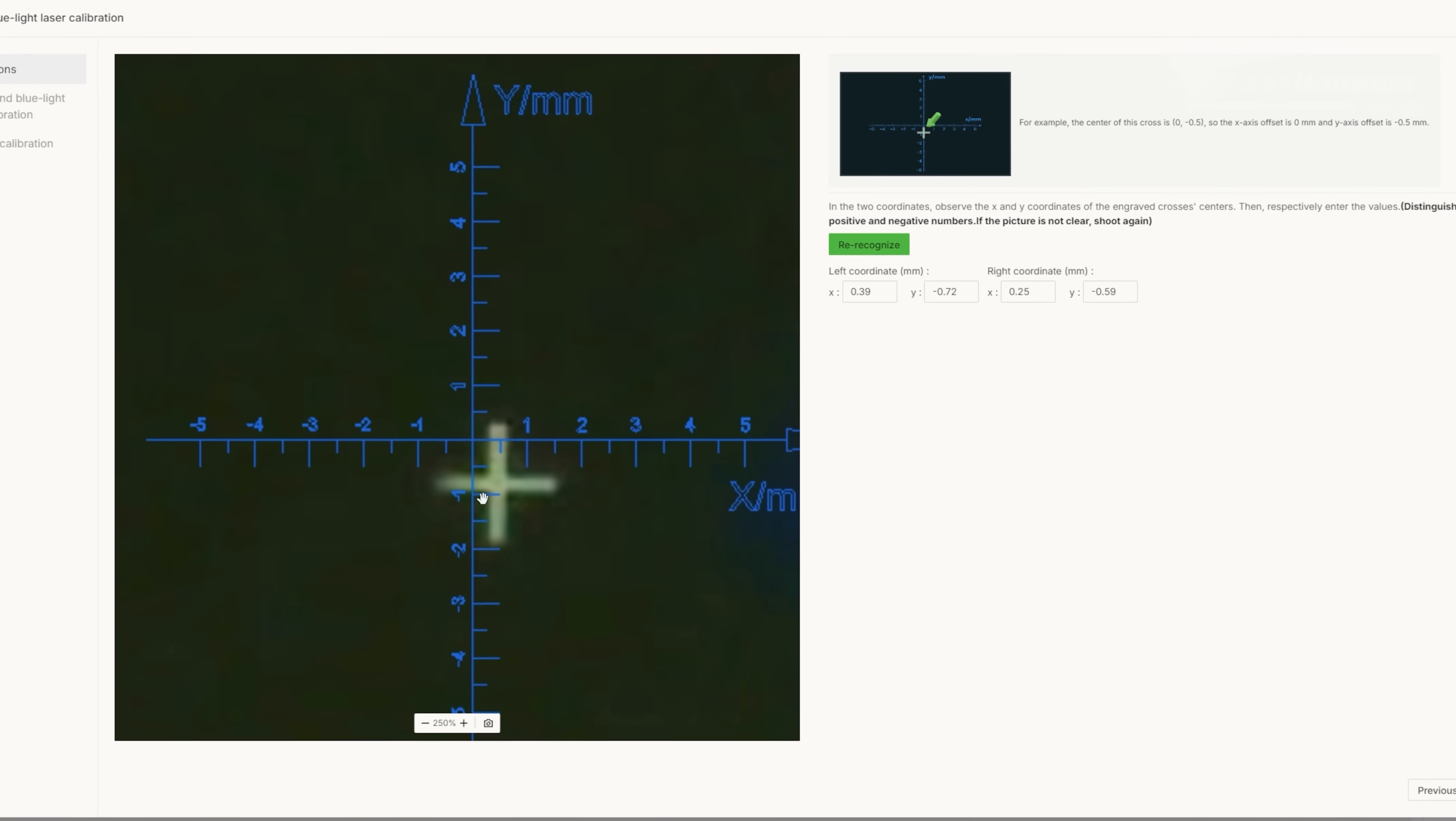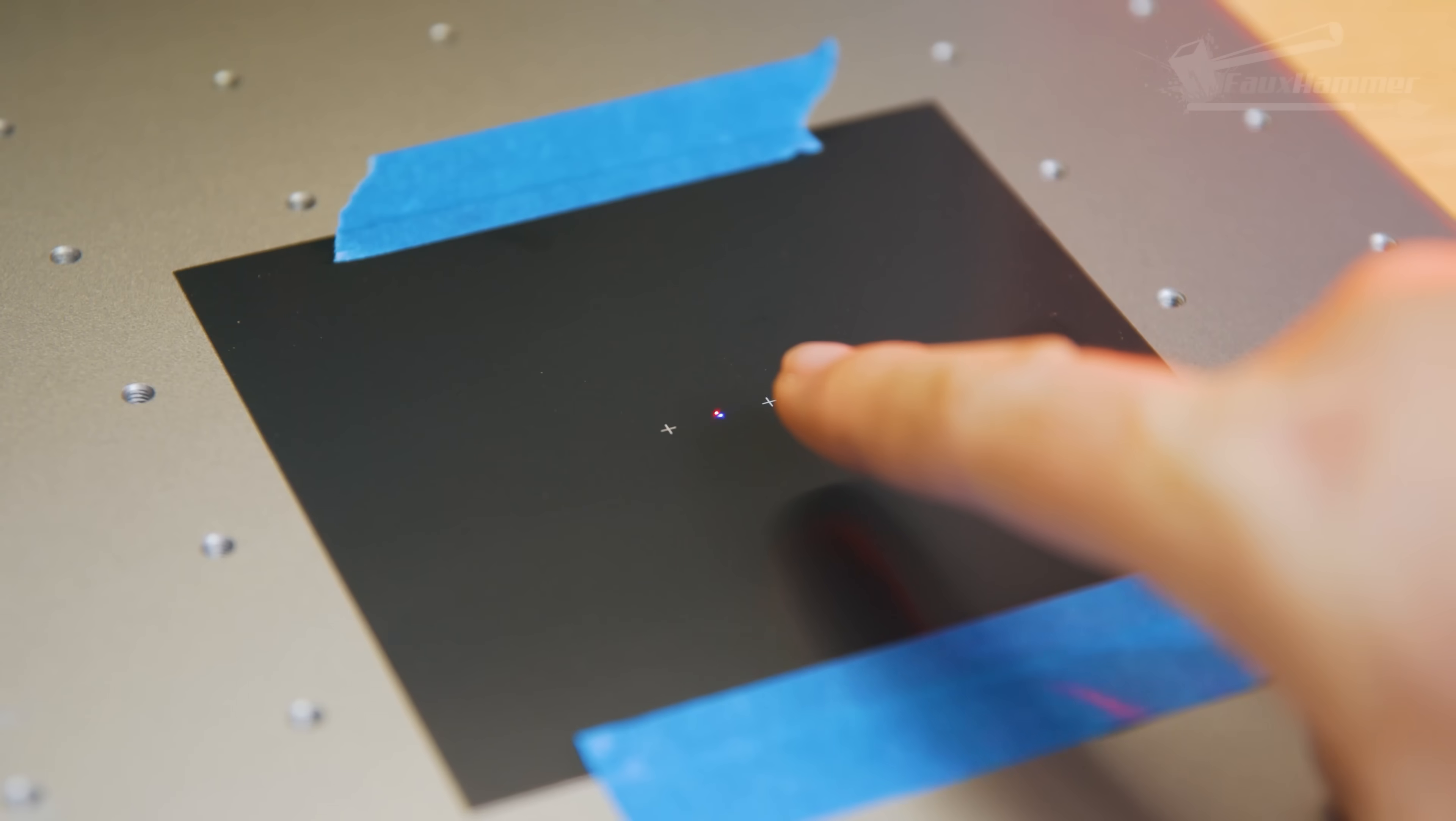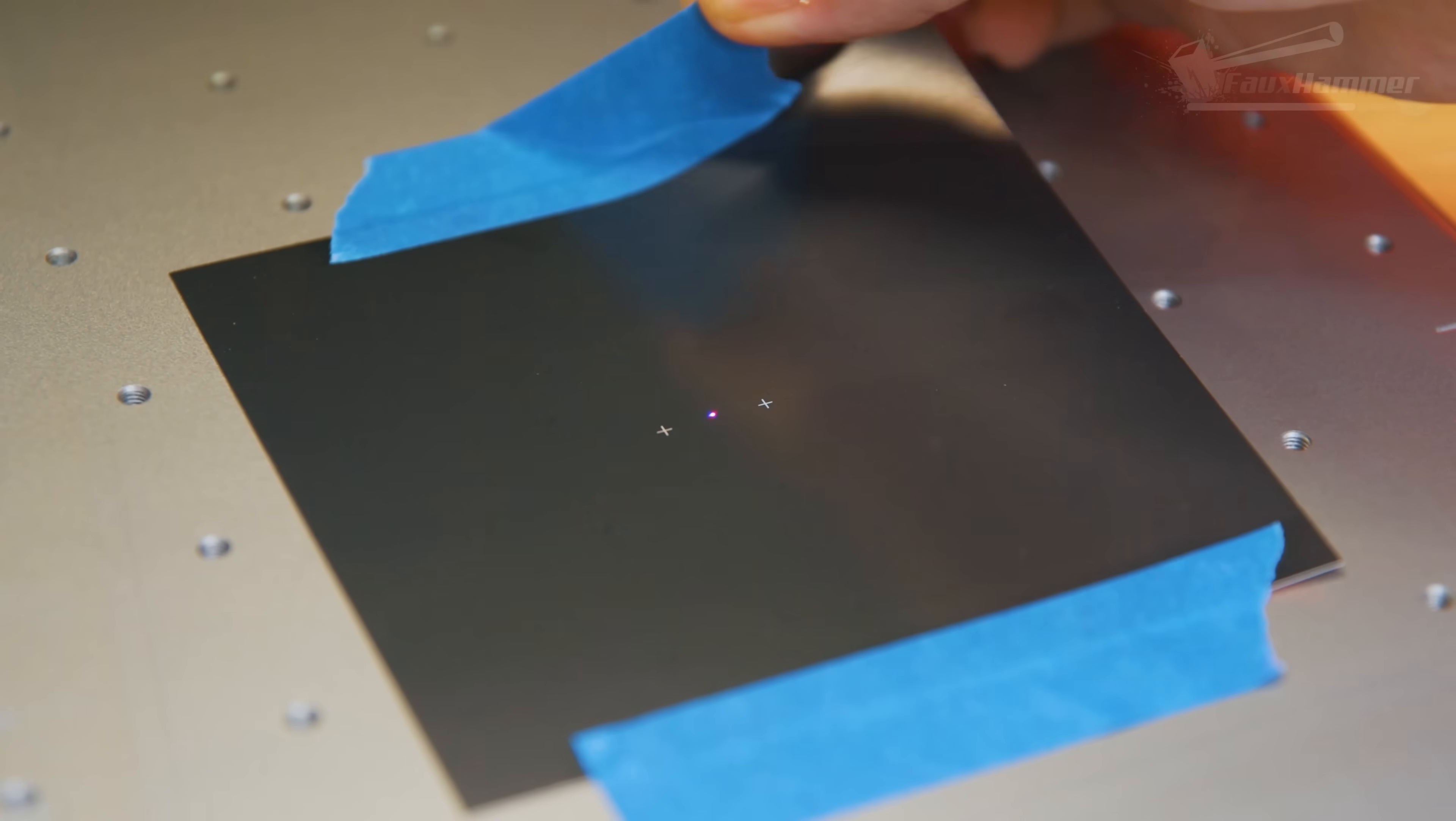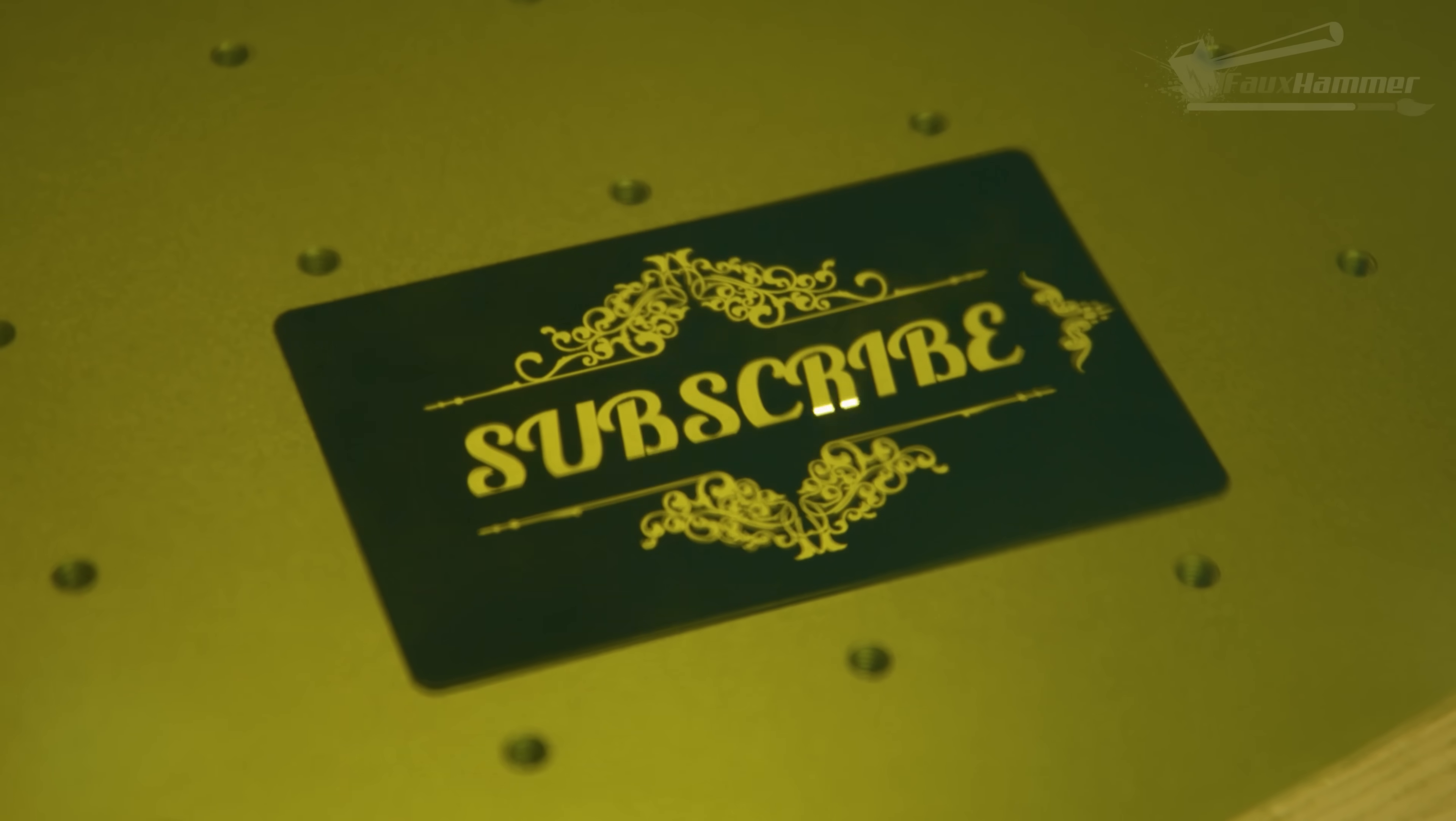From that point on, it can automatically detect any material height, unless it's reflective, in which case just pop a sheet of paper on top. But then, just engrave stuff, literally. This is where this laser really shines. Do you get it? All right, sorry.